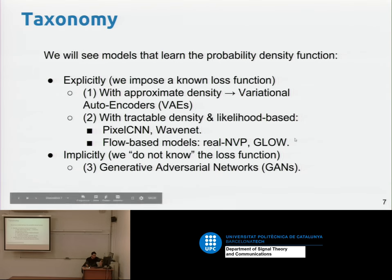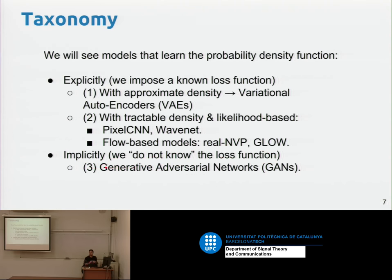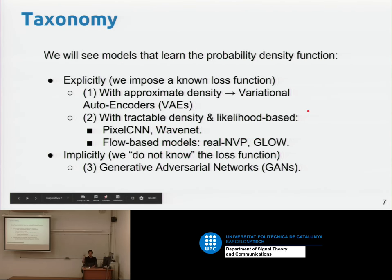Today we'll first go into the implicit approach, which means I don't have log of P of X — maximizing likelihood is not my formula. This is generative adversarial networks. We will work with something I call the mirror effect — it's not something you look into directly, but you have the reflection of it. You don't know the exact shape of the distribution, but you still get the distribution and the samples it gives you.